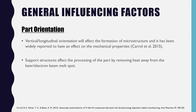Lastly, we have part orientation. Whether you place the part vertically or in a longitudinal orientation will affect the formation of the metallic microstructure, and it has been widely reported to have an effect on mechanical properties. In layman's terms, you can think of microstructure as the grains of a tree trunk — tree grains grow parallel to the direction of the trunk, and it is the same with the grains in metal microstructure.